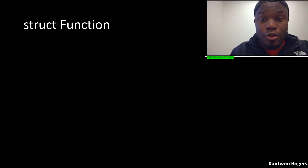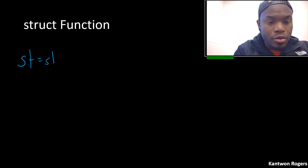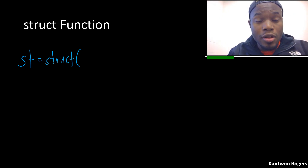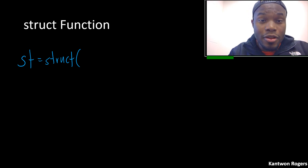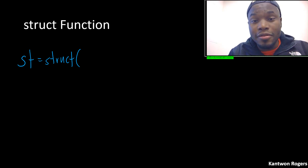The first way of creating structures is using the struct function. The inputs to the struct function — so the struct function returns a structure, I'm just going to call it st. So you have the word struct, and then the inputs are these pairs of field names and values.